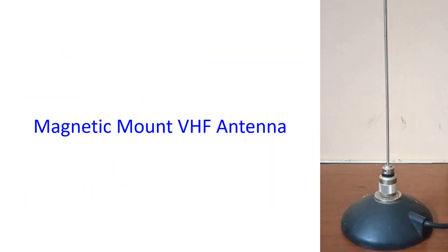Magnetic mount antennas for mobile use also come under the category of monopole antennas. They are popular among ham radio operators who do not want to drill the chassis of their vehicle to install a mobile antenna, as drilling would also affect the resale value. Magnetic mount antennas can also be used as indoor antennas to access a nearby VHF repeater if placed over a tall steel almirah, which acts as a ground plane — one speaker used this method to access a repeater 30 km away.